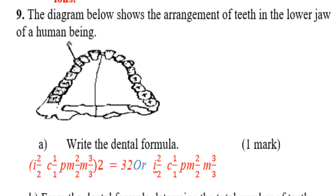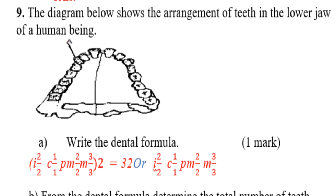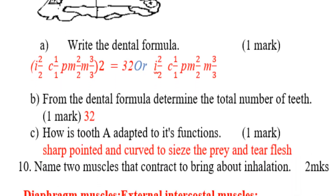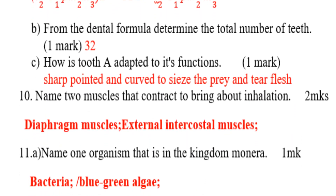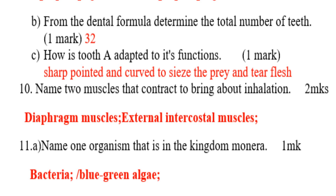You should also be able to differentiate the dental formula for humans, dogs, and other animals. From the dental formula, determine the total number of teeth — that is 32. How is the canine tooth adapted to its function? The canine is sharp, pointed, and curved to seize and tear flesh.